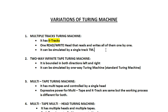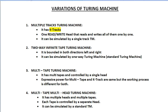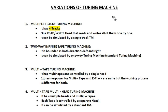A multiple tracks Turing machine can also be simulated by a single-track Turing machine. In a standard Turing machine, there is a single tape on which read and write operations are done one after another. With multiple tracks, the machine is called a Multiple Tracks Turing Machine.